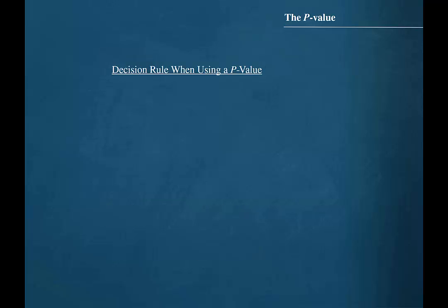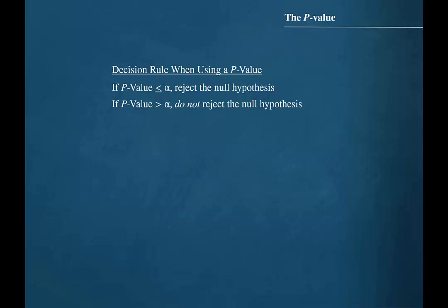The decision rule when using a p-value is: if the p-value is less than or equal to alpha, reject the null hypothesis. If the p-value is greater than alpha, do not reject the null hypothesis.